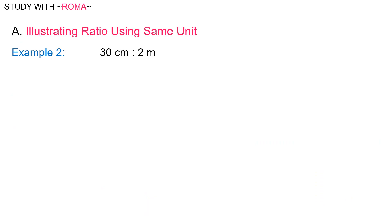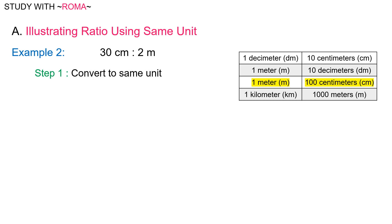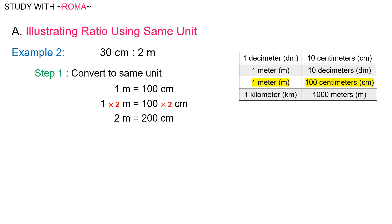Example number 2: 30 centimeters is to 2 meters. Step 1: convert to the same unit using our conversion table. Find meter to centimeter. We have 1 meter is equal to 100 centimeters. However, we need 2 meters, so we will multiply 1 meter by 2 and 100 centimeters by 2. We now have 2 meters is equal to 200 centimeters.